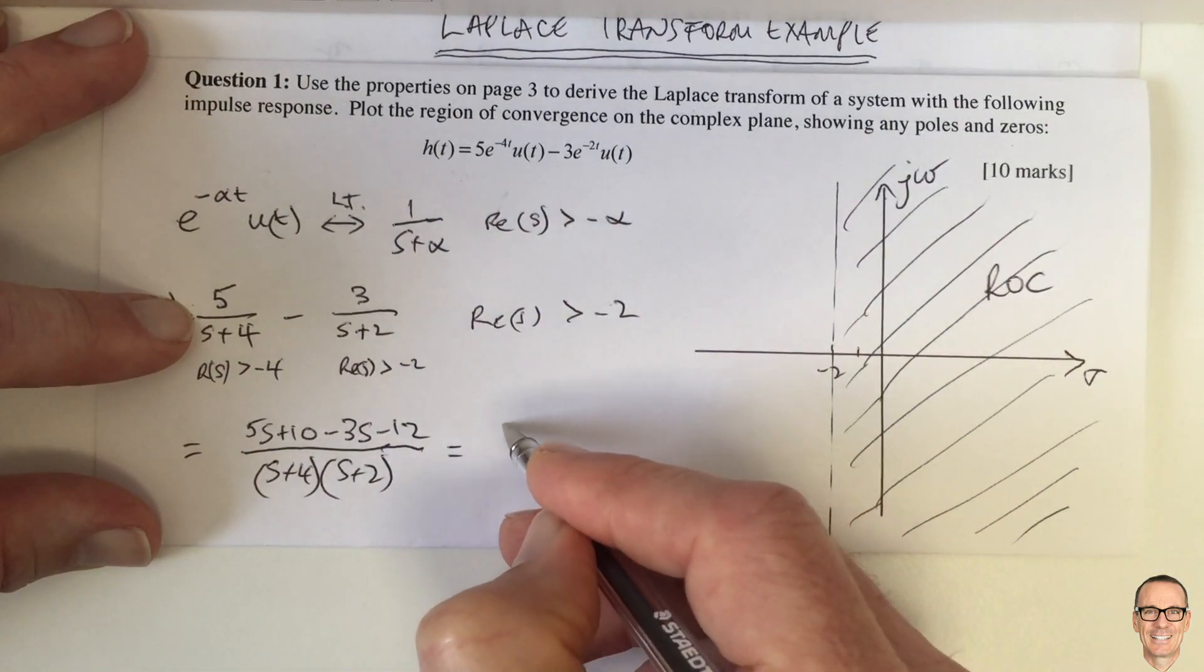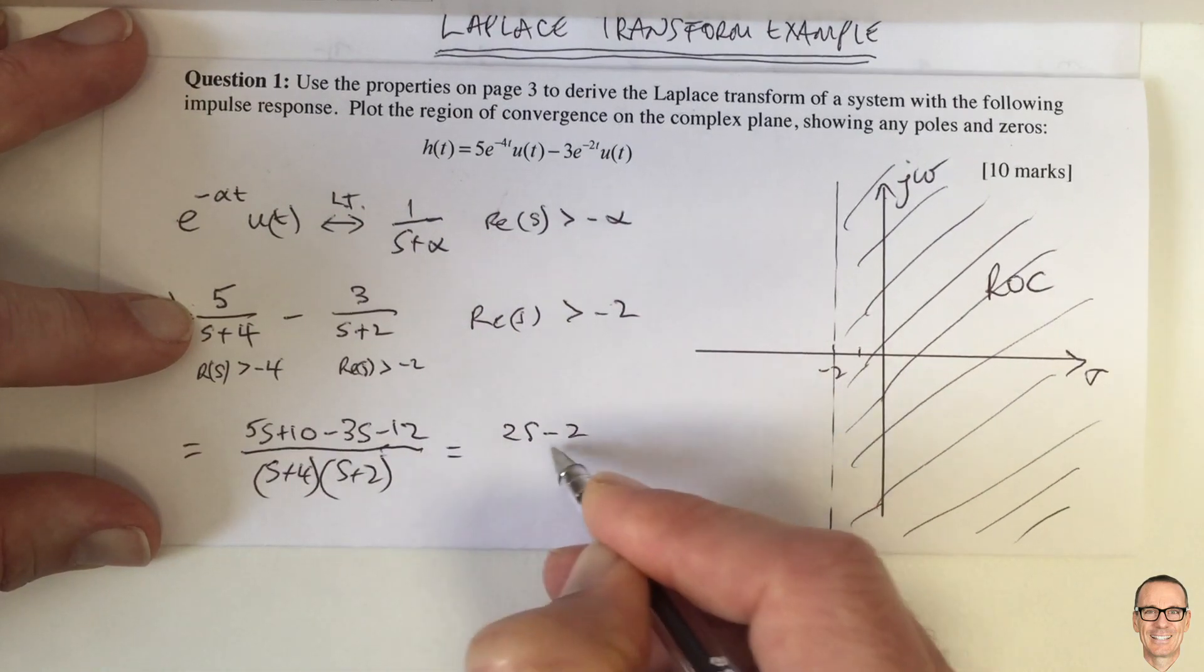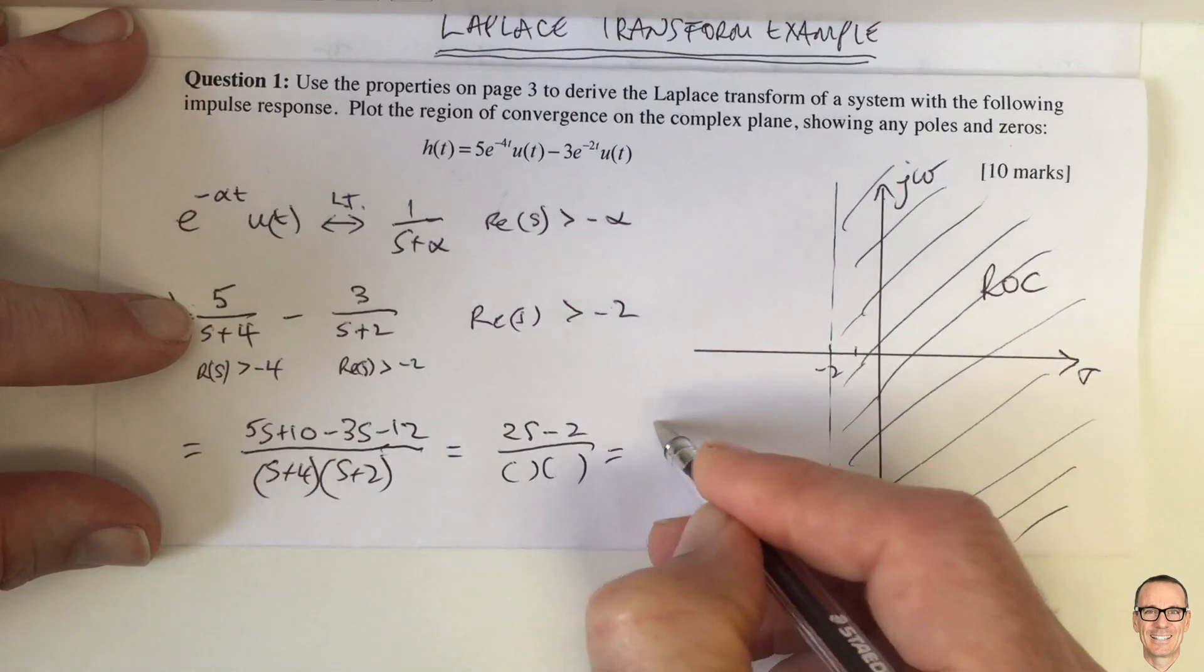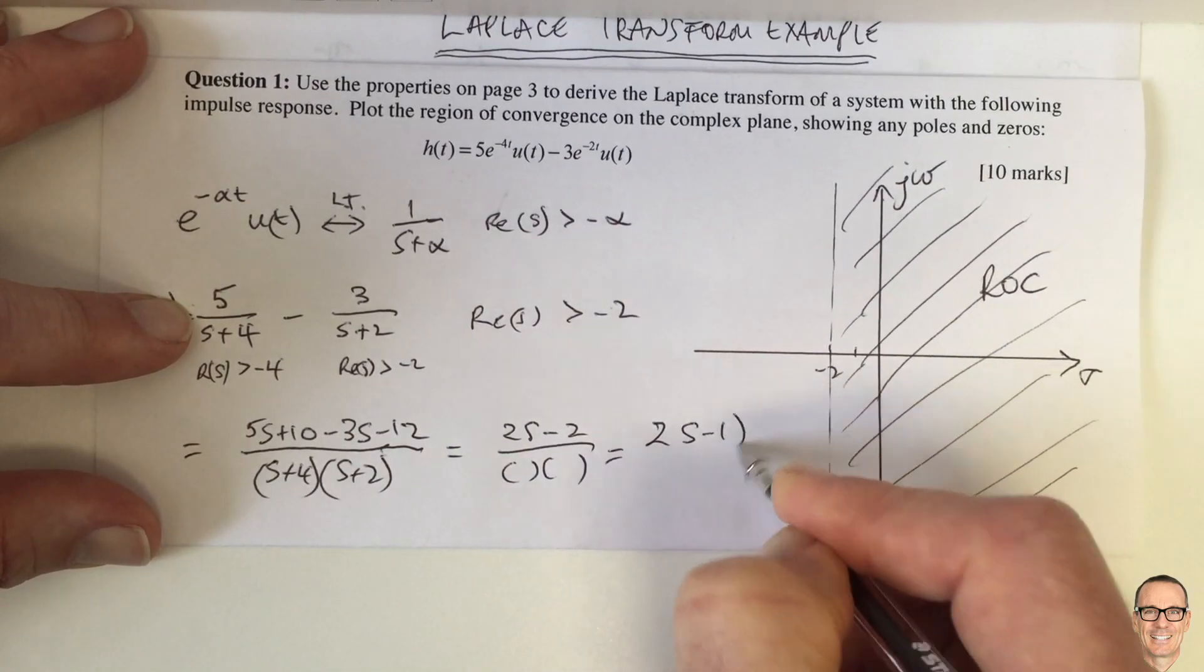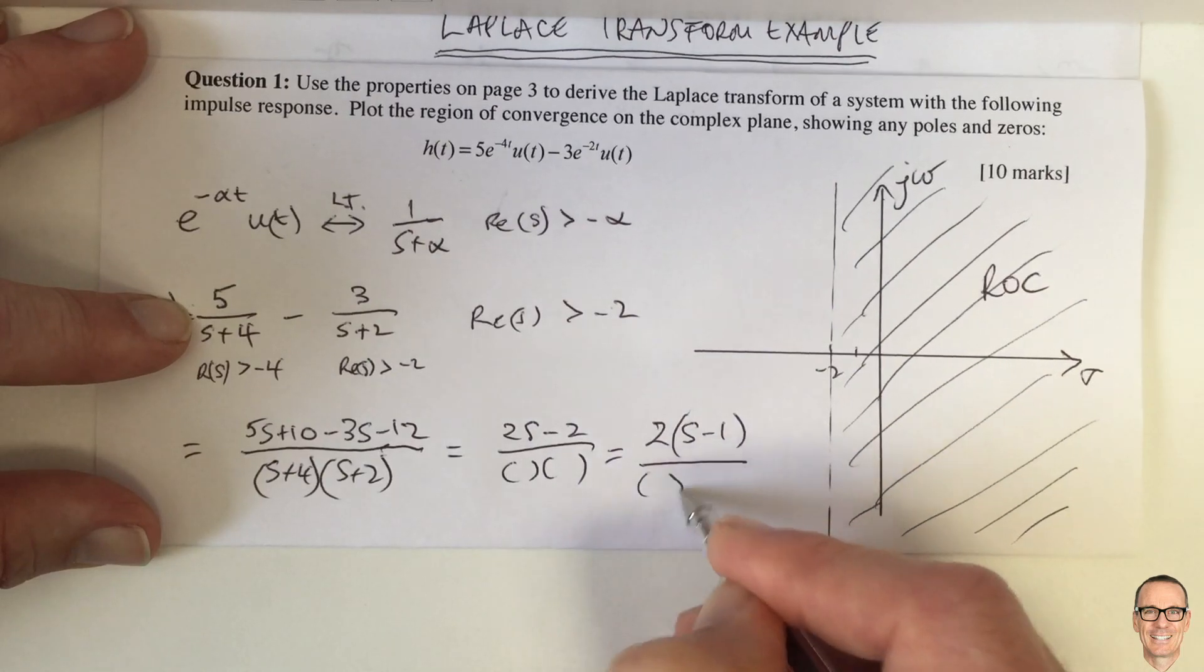which equals 2s minus 2 divided by those two terms, which equals 2 outside of s minus 1 divided by those two terms.